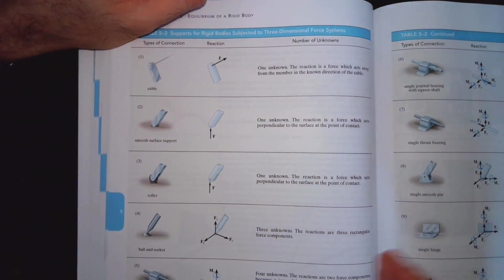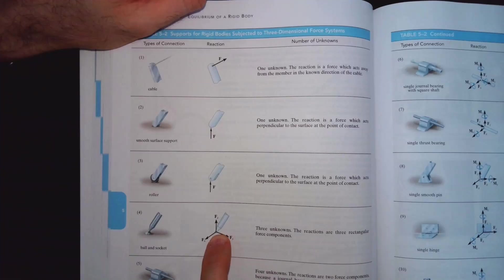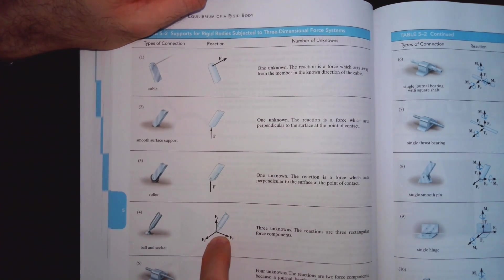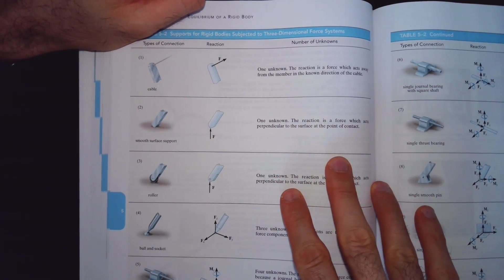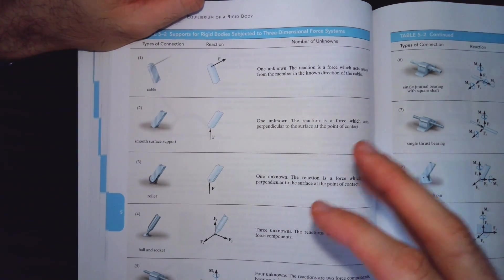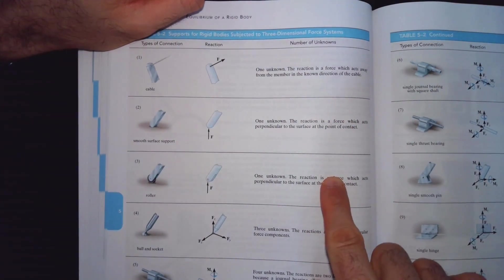So this is a pin support. Normally you would only have two components in two dimensions. It's going to be three components in three dimensions. If you look at your textbook it might look overwhelming, but these are really the same concept with slightly different representation. So these three are pretty much the same.